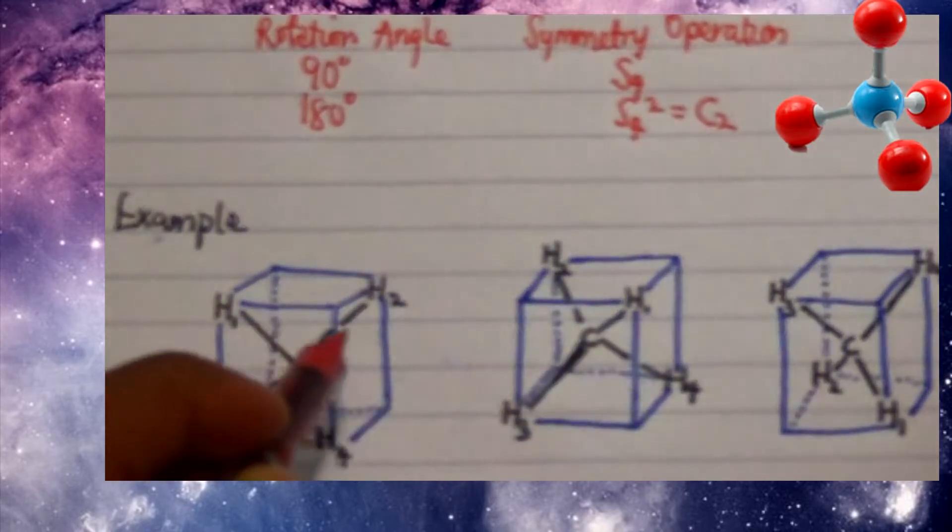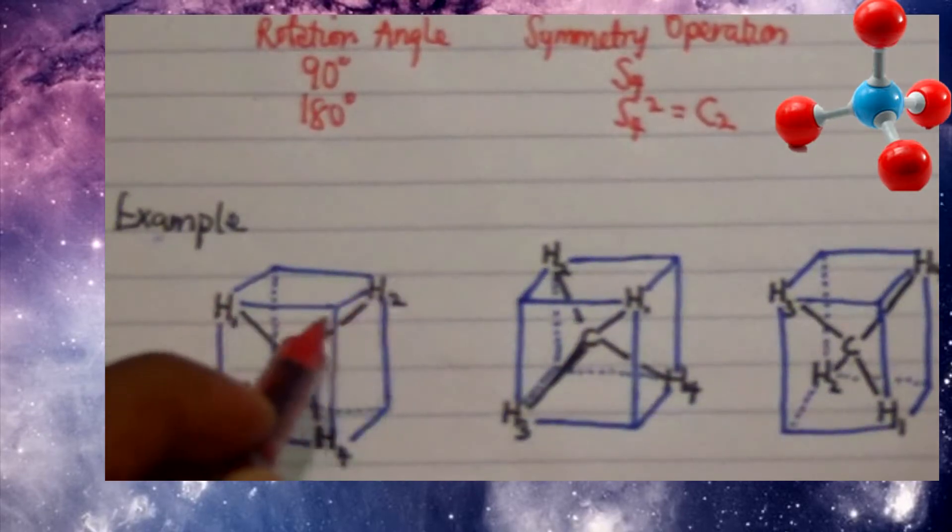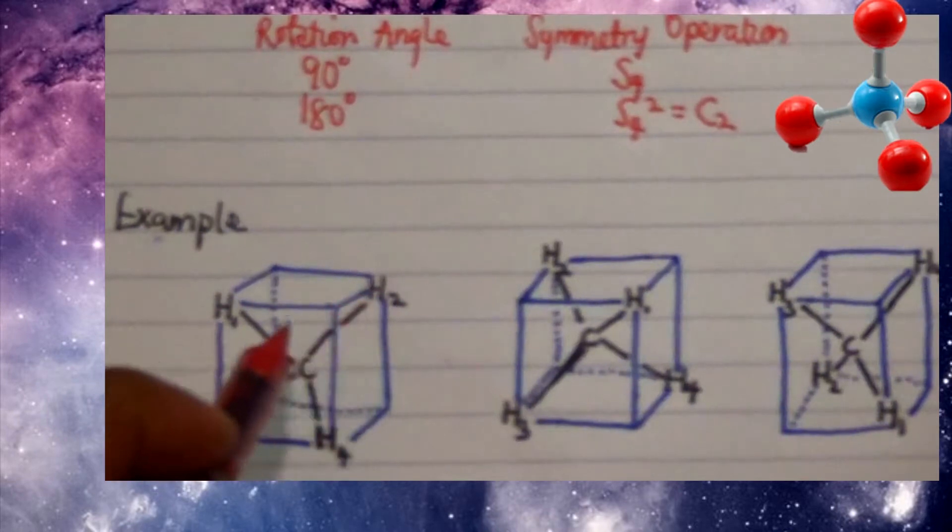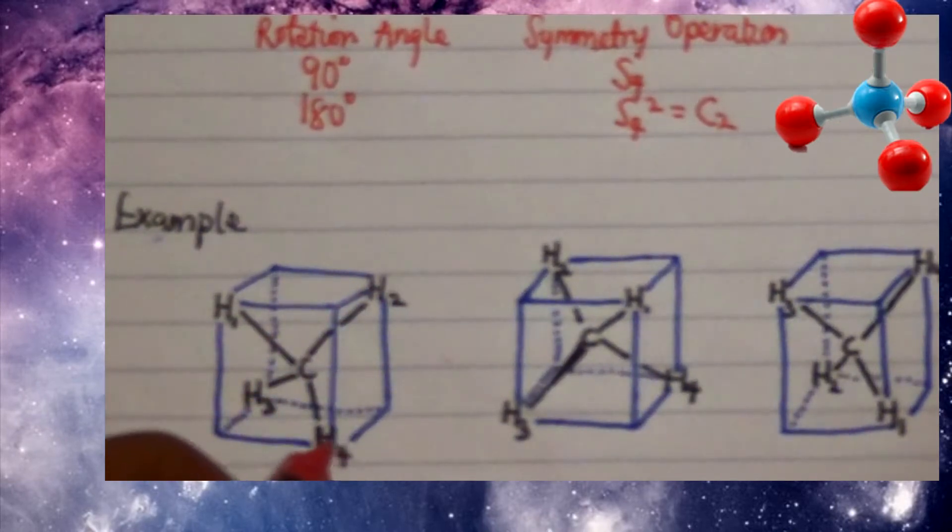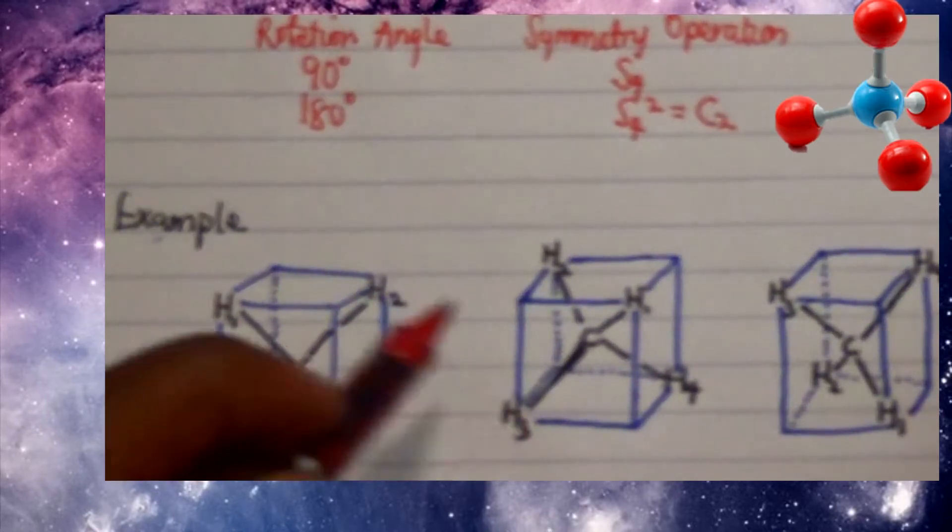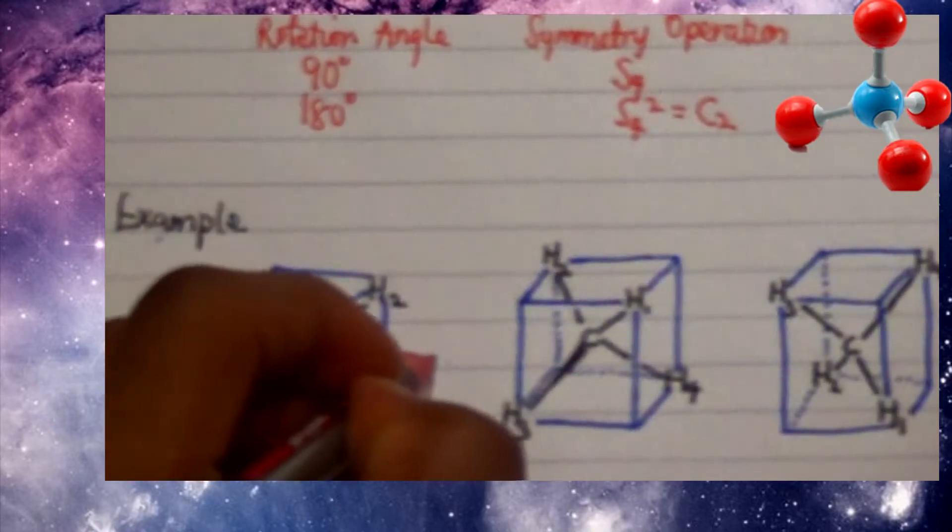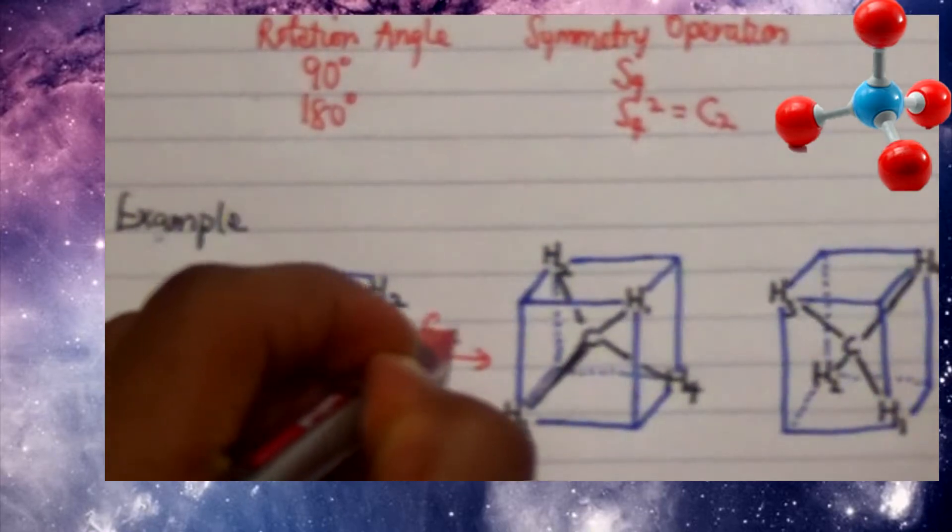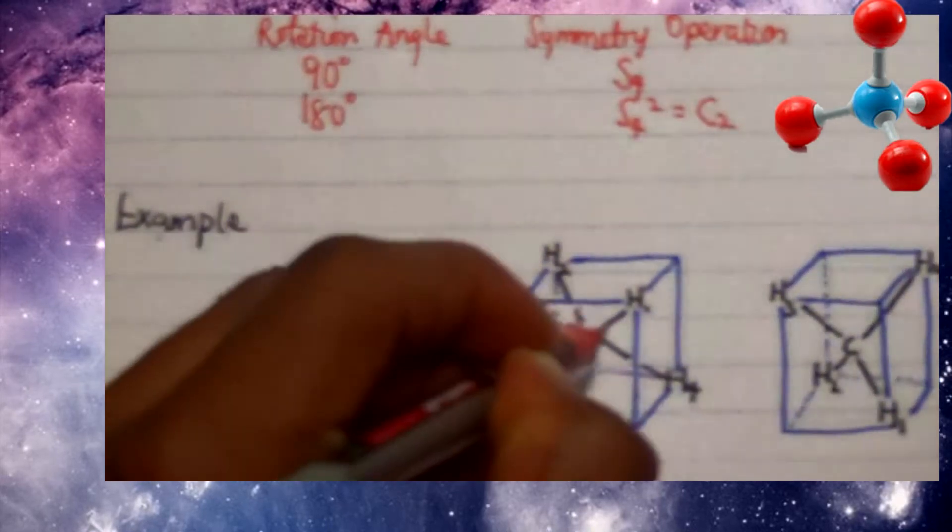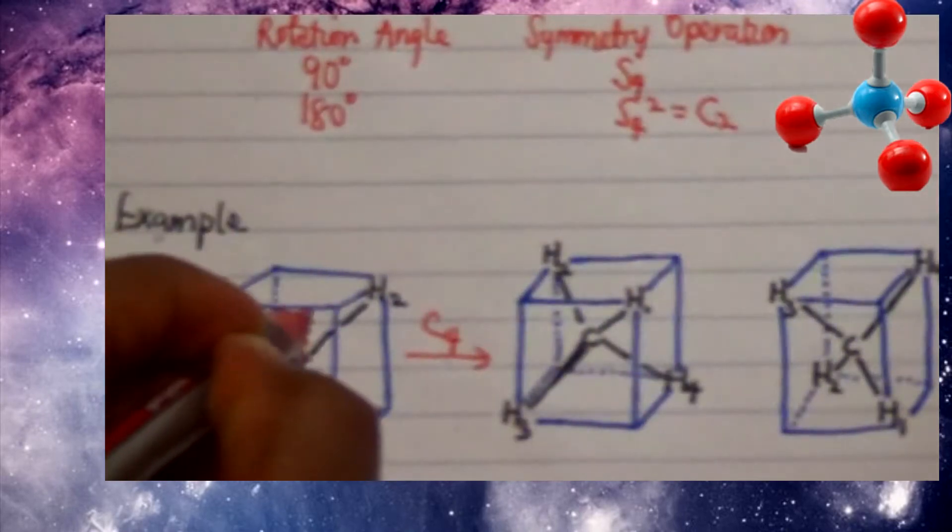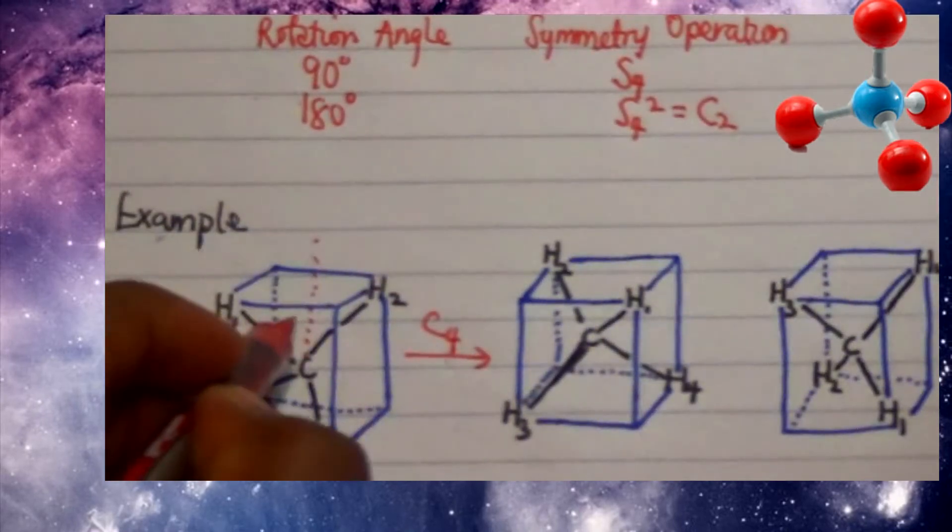So if I perform an operation what I get is my tool moving 90 degrees from where it was. So all my atoms that are actually terminal or that are at the edges are actually moving 90 degrees from each other.